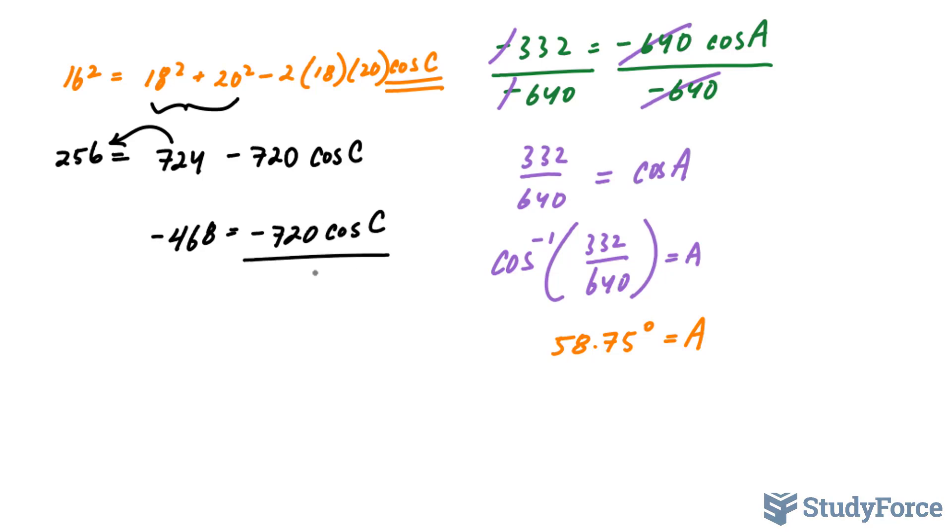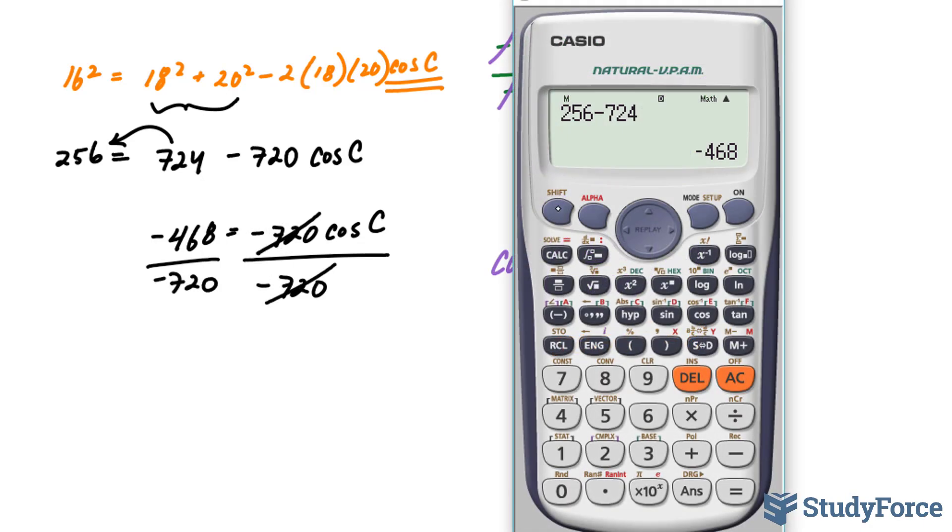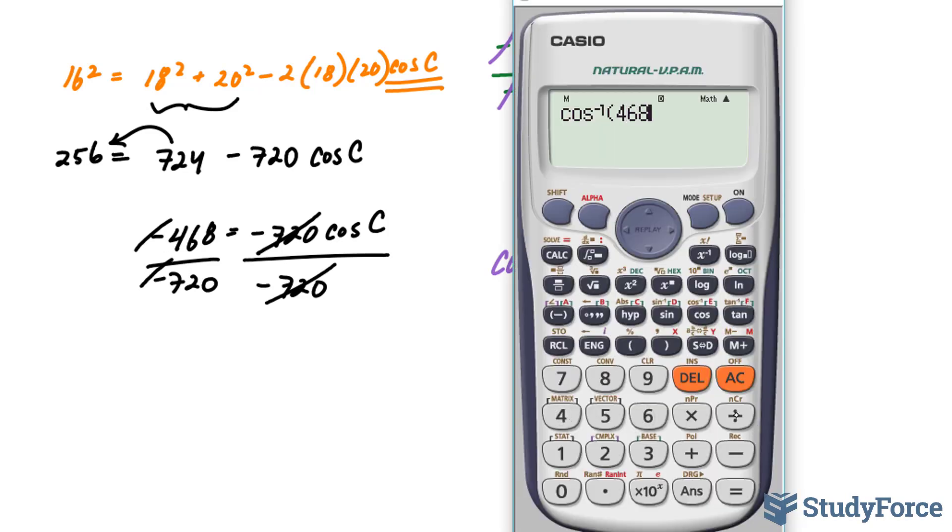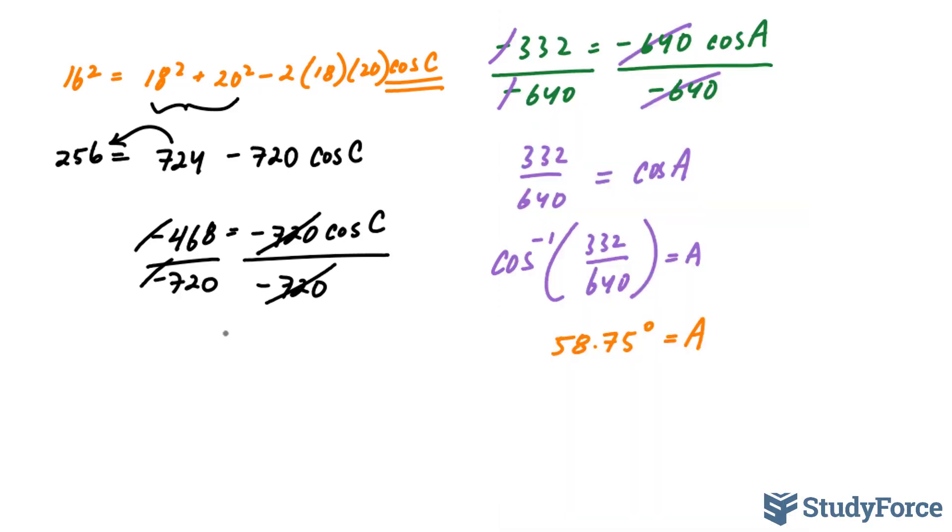Dividing both sides now, as we did before, by -720, you end up with cos or inverse cosine of these two numbers. You don't need to write down negative because they'll cancel out anyway. And we're left with 468 over 720. And that gives us 49.45°. Angle C is 49.45°.